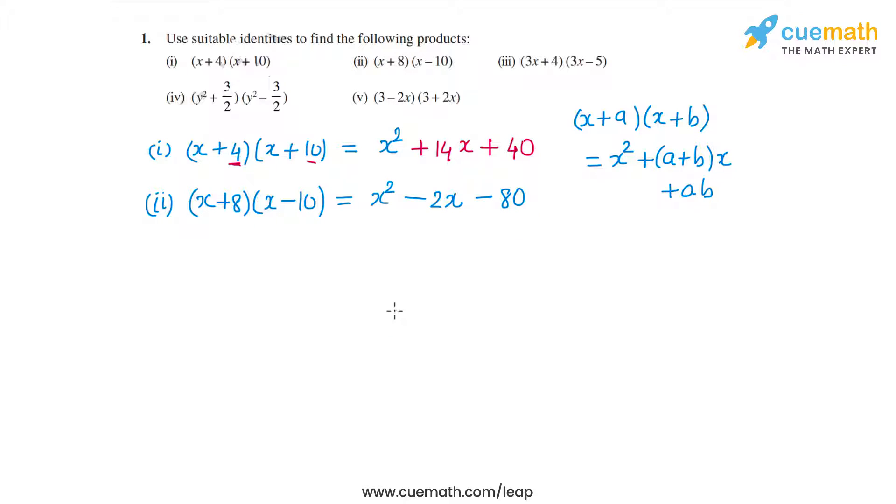In the third part, I have (3x + 4) and (3x - 5). Again, the first part of each factor is the same, 3x and 3x, and then I have 4 and -5. This is again of the form (x + a)(x + b), the difference being that in this case instead of x we have 3x.